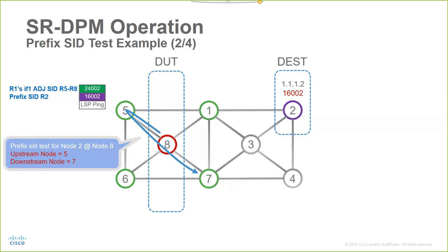Note that the change of the downstream path is accomplished by varying the destination IP address used in the LSP ping. This will cause node 8 to hash the test traffic towards router 7 instead.